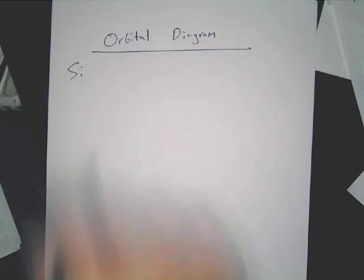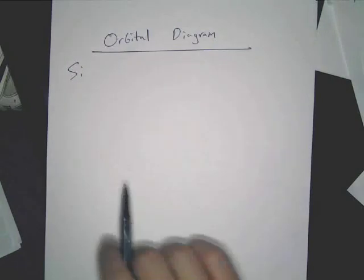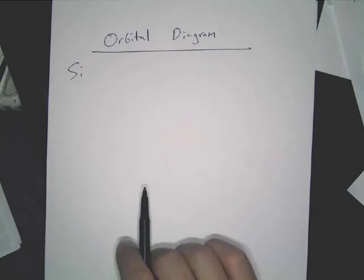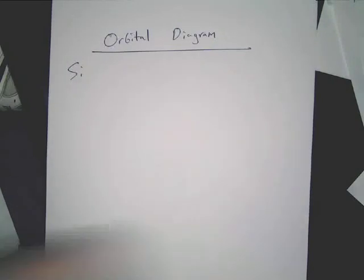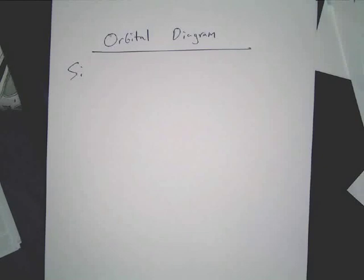We're going to do the orbital diagram of silicon, and then I'm going to show you how to do electron configuration, which is shorter, and a noble gas notation, which is even shorter.